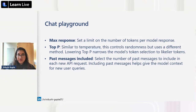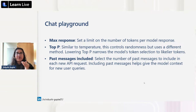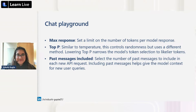There's also the 'past messages included' parameter, which selects how many previous messages to include in the new API request, giving context to the model. For example, if you were planning a Harry Potter-themed birthday party for a six-year-old, it would take the last six messages and pass them back to the model so it retains context and can continue discussing outfits, gifts, and decorations.